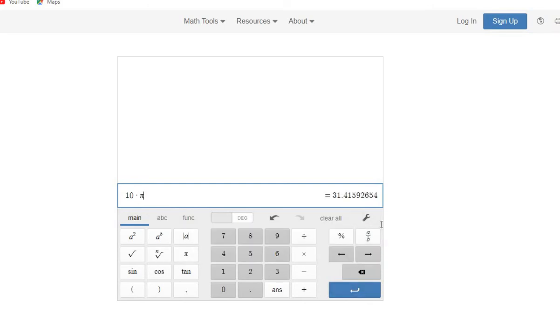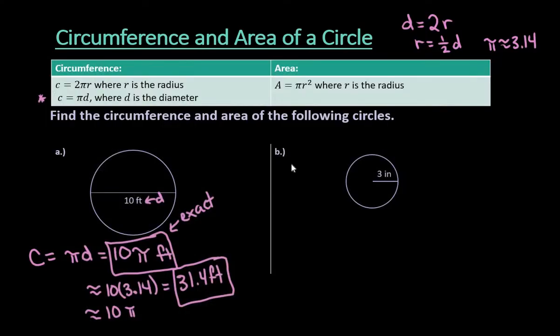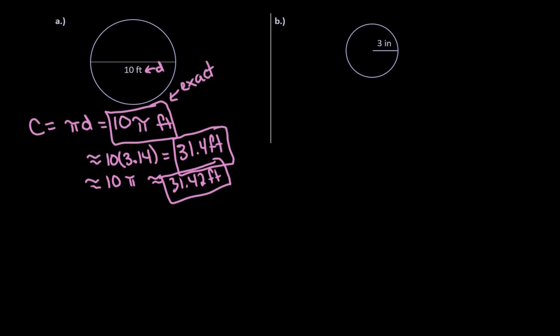And notice it gives me more decimal places. So if it wants you to round to the nearest hundredth, you would have to use the pi button. And we can see that it's 31.42 approximately. So that is our circumference. Like I said, just read your directions carefully. Every text is different. Sometimes they want exact answers, and sometimes they want approximate answers.